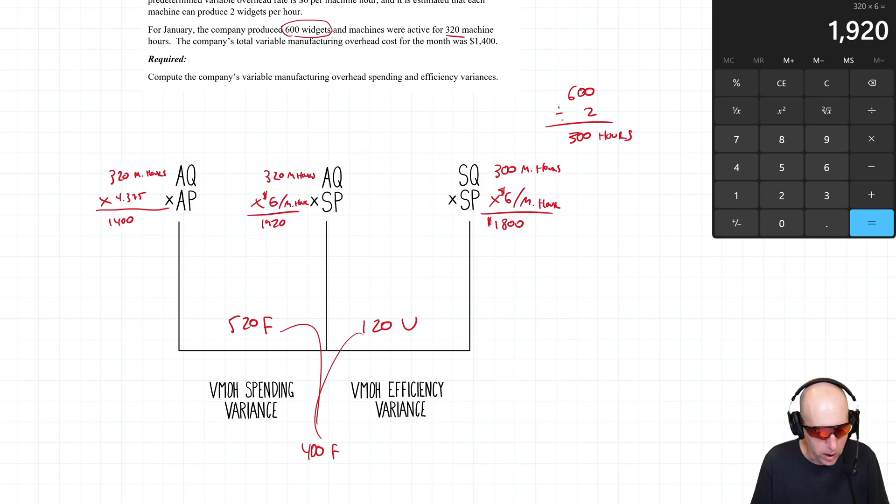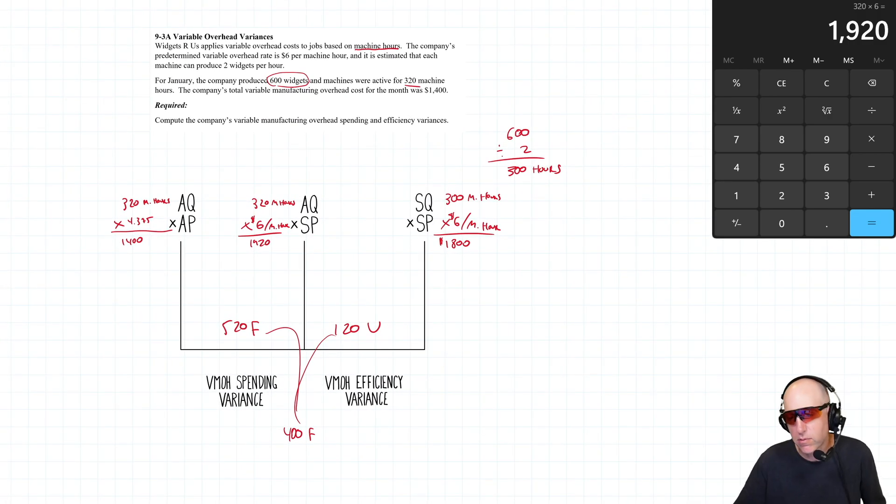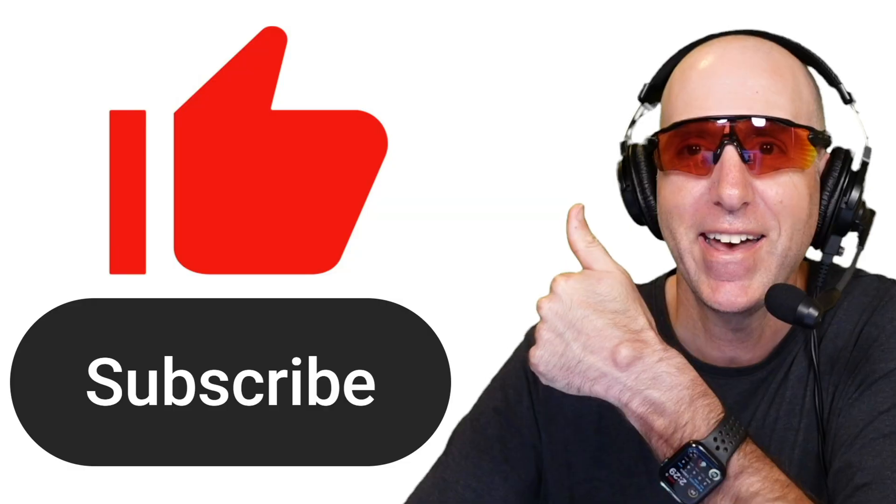There we go. We've solved 9.3a on variable overhead variances. Thanks for watching. The next video in our series is right up here, and if you want a super cut of all the videos in this series, that's the one down below.